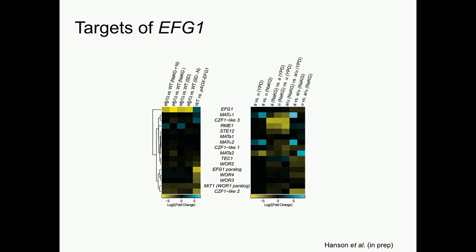To look at how EFG1 might be playing a role in mating, I did RNA-seq analysis for an EFG1 deletion in the NCYC 495 background as well as an overexpression strain. Among the differentially expressed genes, we found other genes involved in white-opaque phenotypic switching in Candida albicans, such as CZF1 and the WOR genes. We also found that RME1 is suppressed by EFG1 in nutrient-rich conditions. RME1 is a regulator of both meiosis and mating in yeast species. Looking at expression patterns from the first RNA-seq dataset under nitrogen-rich and nitrogen-poor conditions, RME1 shows increased transcription when nitrogen is limited, and we found a similar expression pattern for STE12, another mating and filamentation gene. So we decided to look more closely at EFG1, RME1, and STE12.